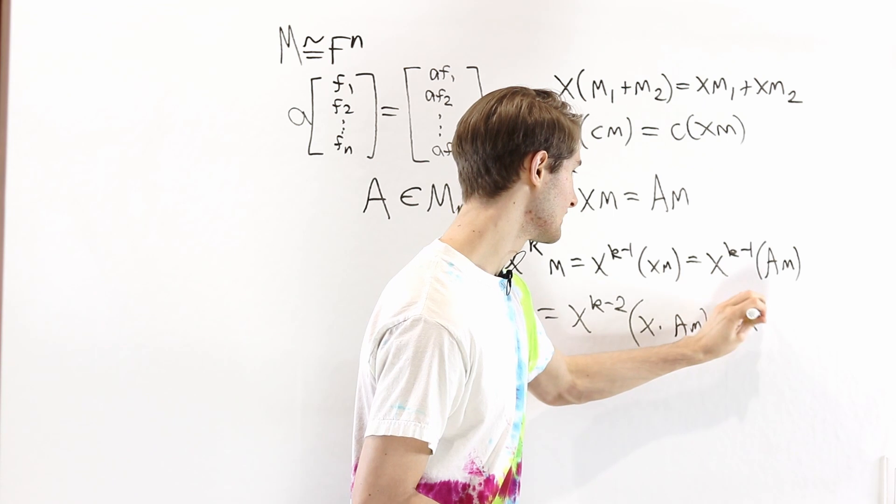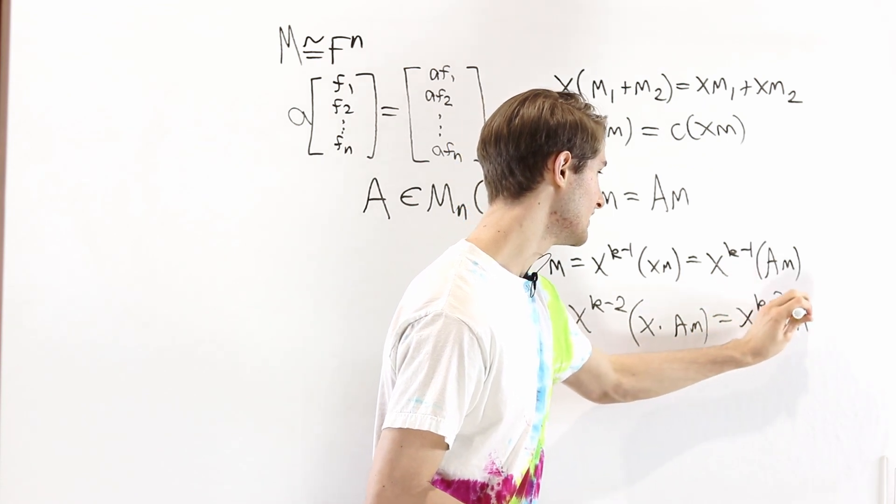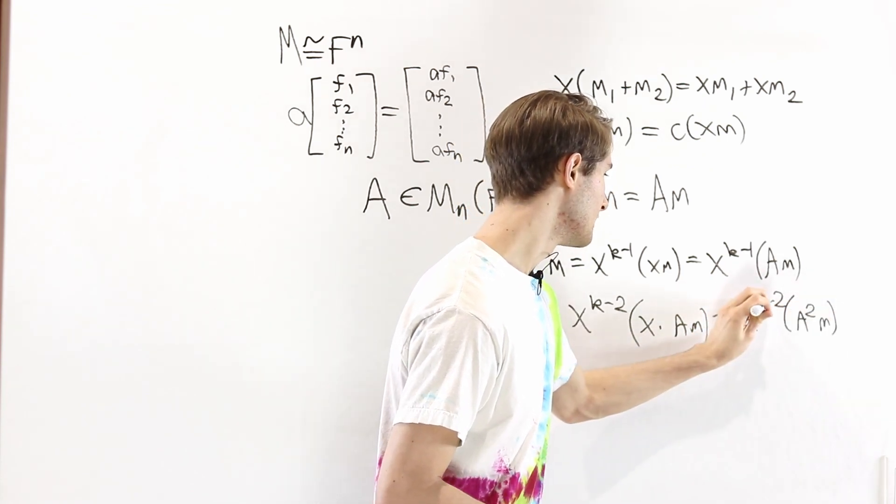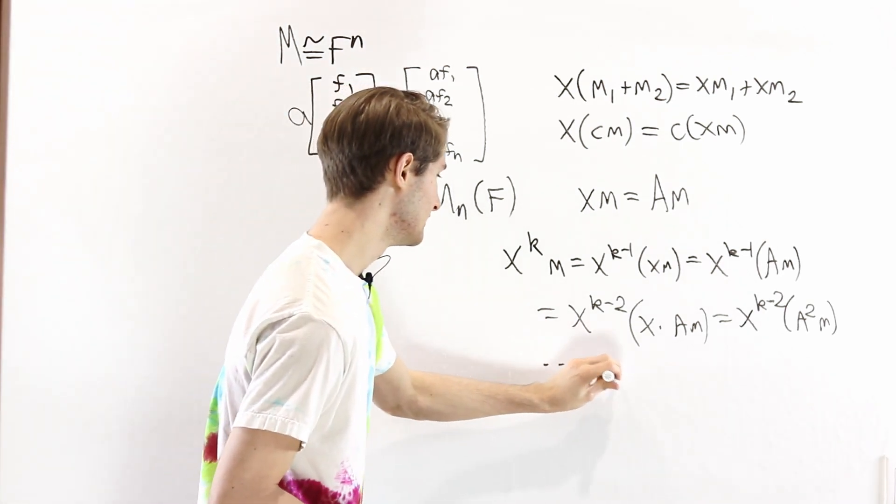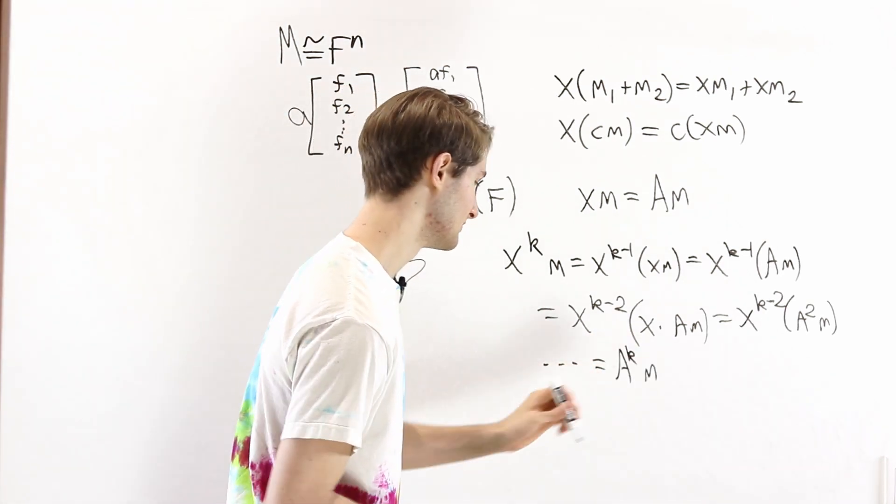So this gives us x to the k minus 2 times a squared m. And of course, we can keep repeating this over and over again, and we get a to the k times m.